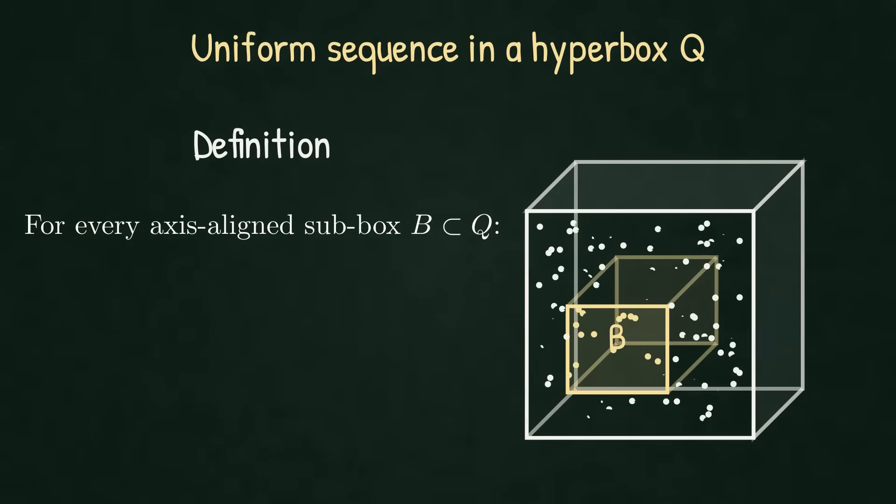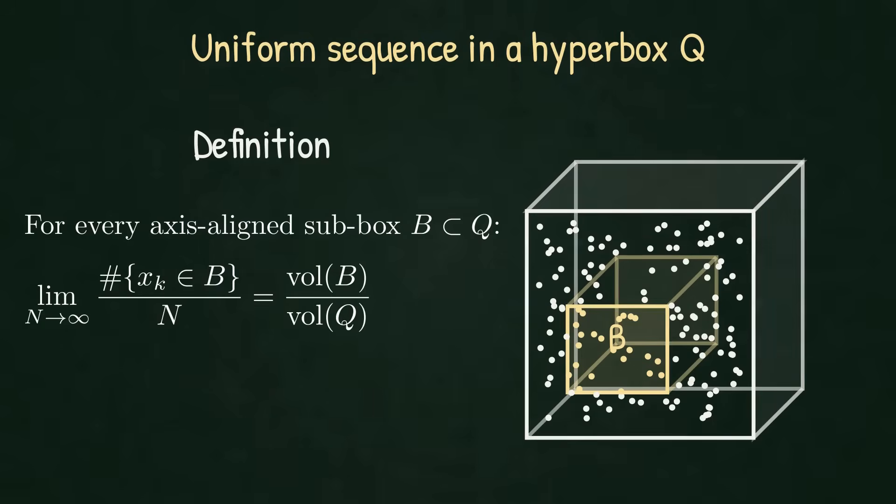Our domain is a hyperbox Q. The notion of correct distribution is measured against axis-aligned subboxes inside of Q. So, we take a sequence xk in Q. And for every axis-aligned subbox B, which is a subset of Q, look at the proportion of the first n terms that lie in B.